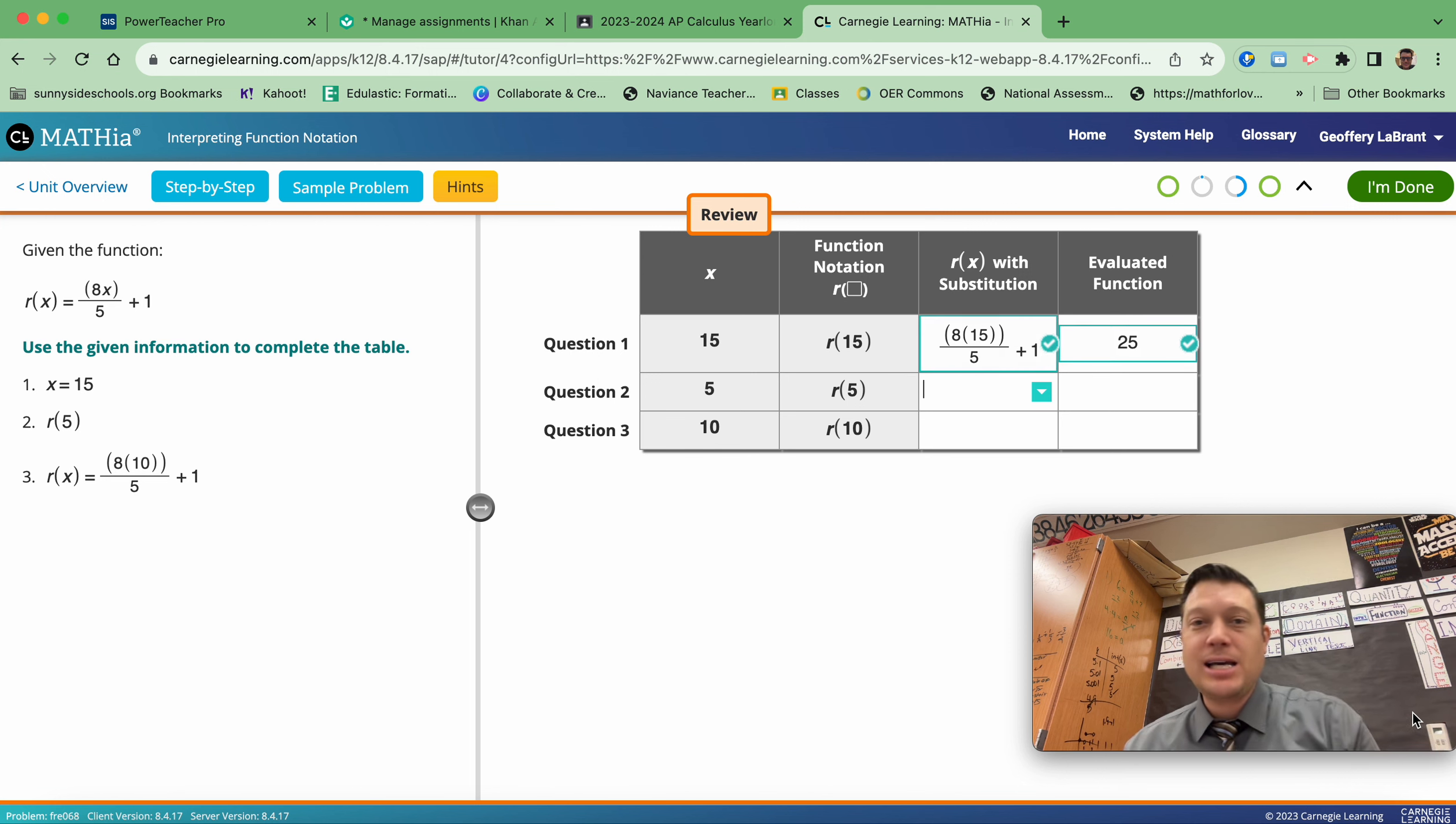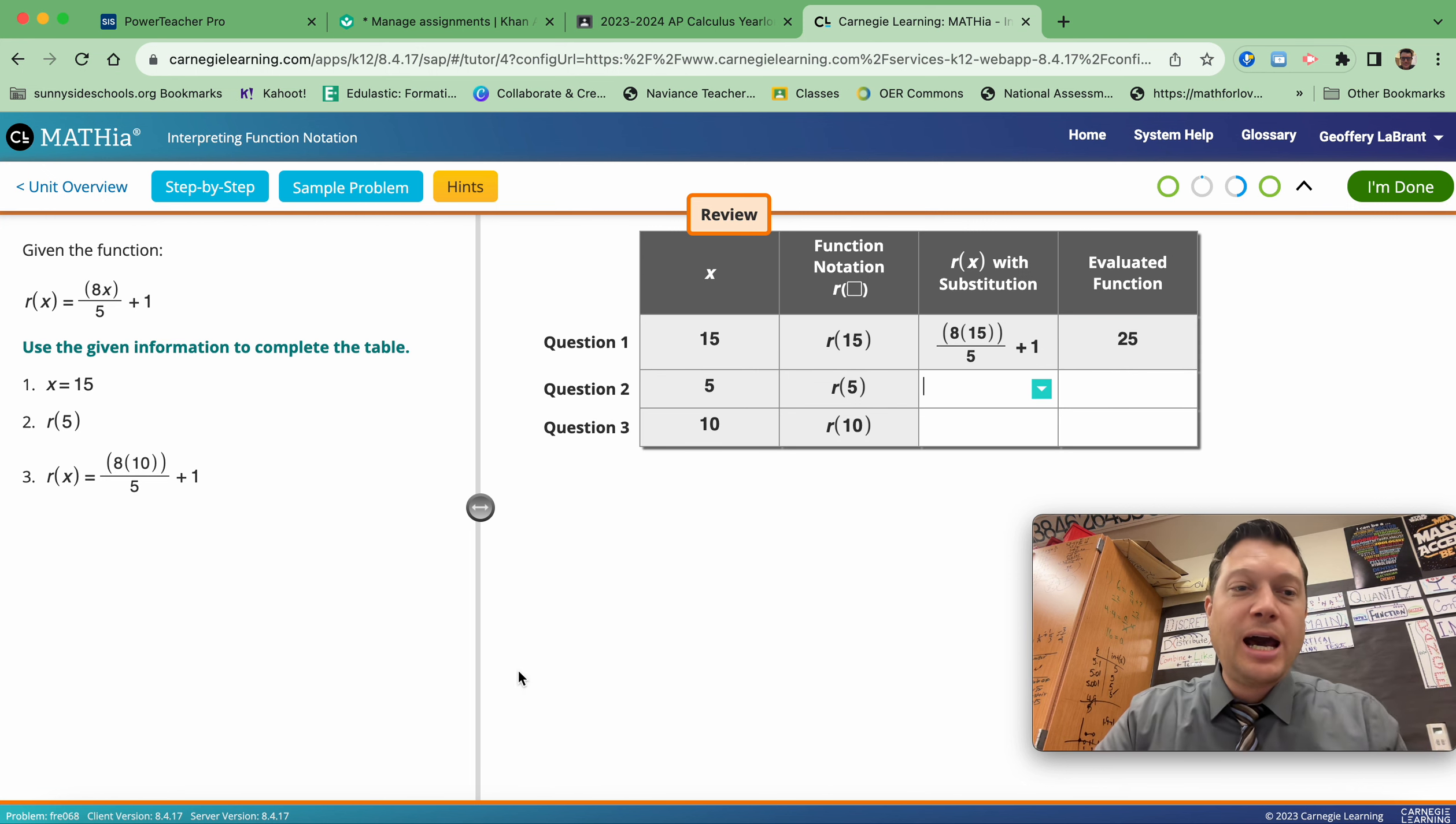You repeat that entire column doing the same thing. You write the entire... I'll highlight it over here. This is the R of X equation, but every new row, there's a new thing to replace the letter X with.